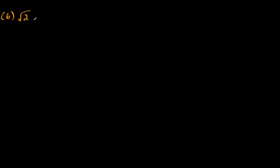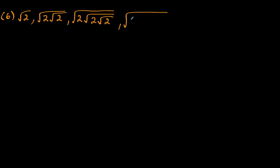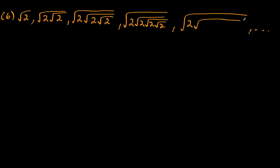For question six, we have a more complex sequence: the first term is square root of two, the second has two radical twos under a bigger radical, the third has three twos under the radical, and so on with one more two added each time. We want a formula for the nth term. The trick is to rewrite each term using rational exponents. The first term is two to the one half power.